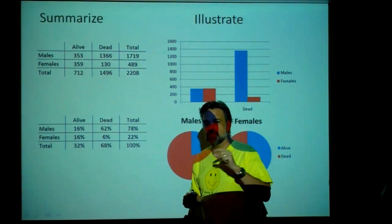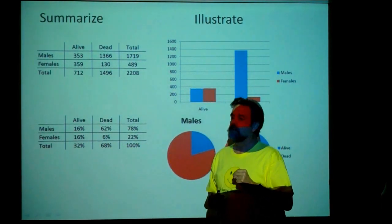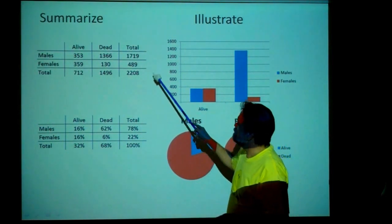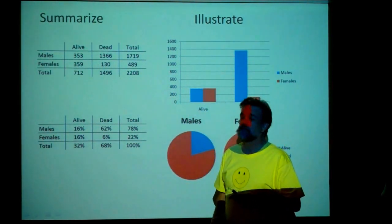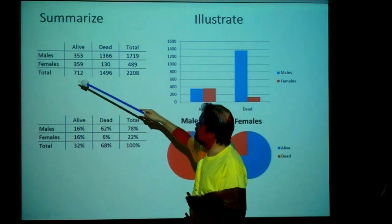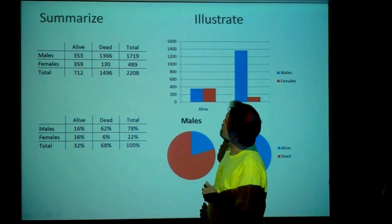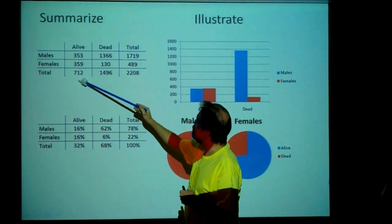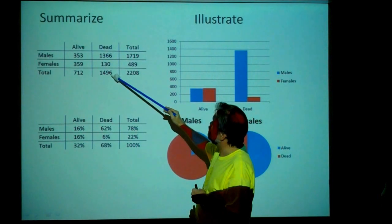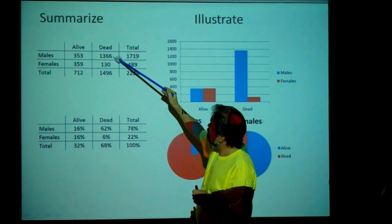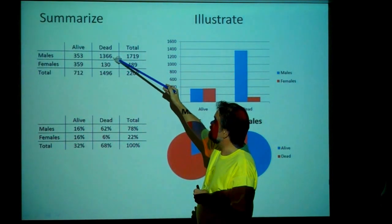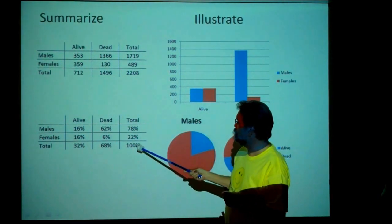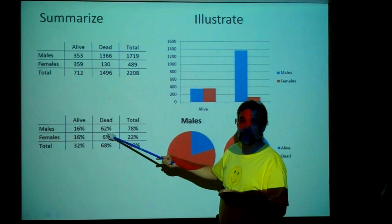Now we're going to move from looking at one variable to looking at two variables — from univariate data to bivariate data. This is called a contingency table. We're looking at both survival and gender. Out of the 1,496 who died, 1,366 were men. It was a bad day to be a guy. 62% of all people on board were males who died.